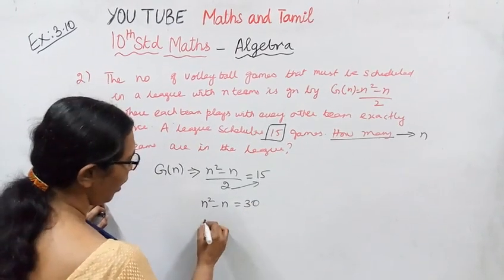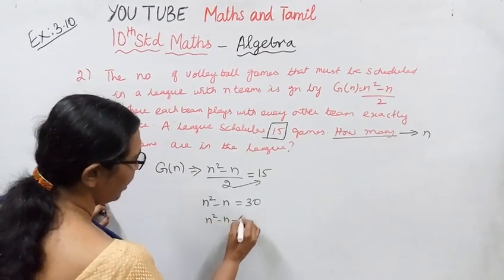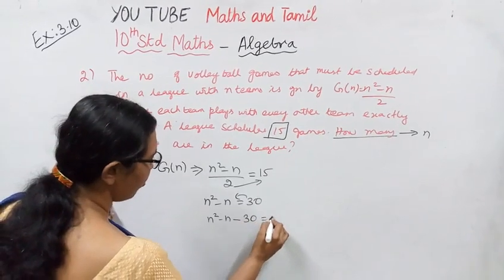So n² - n = 30. Rearranging: n² - n - 30 = 0.